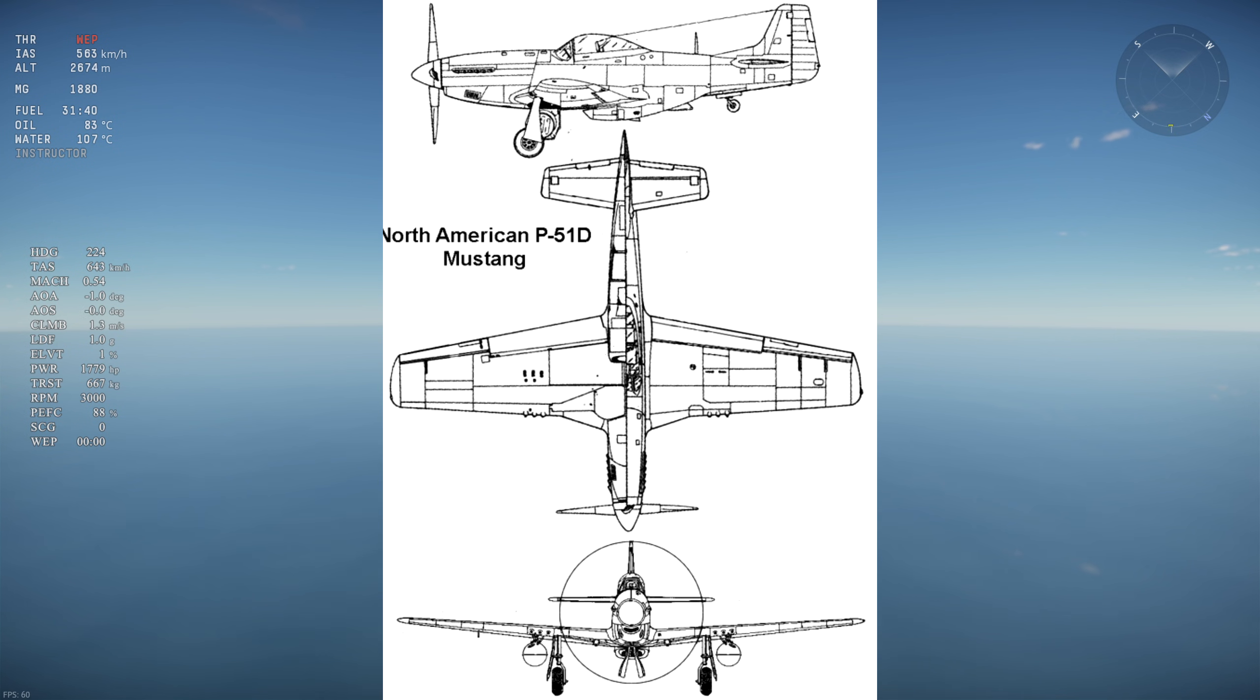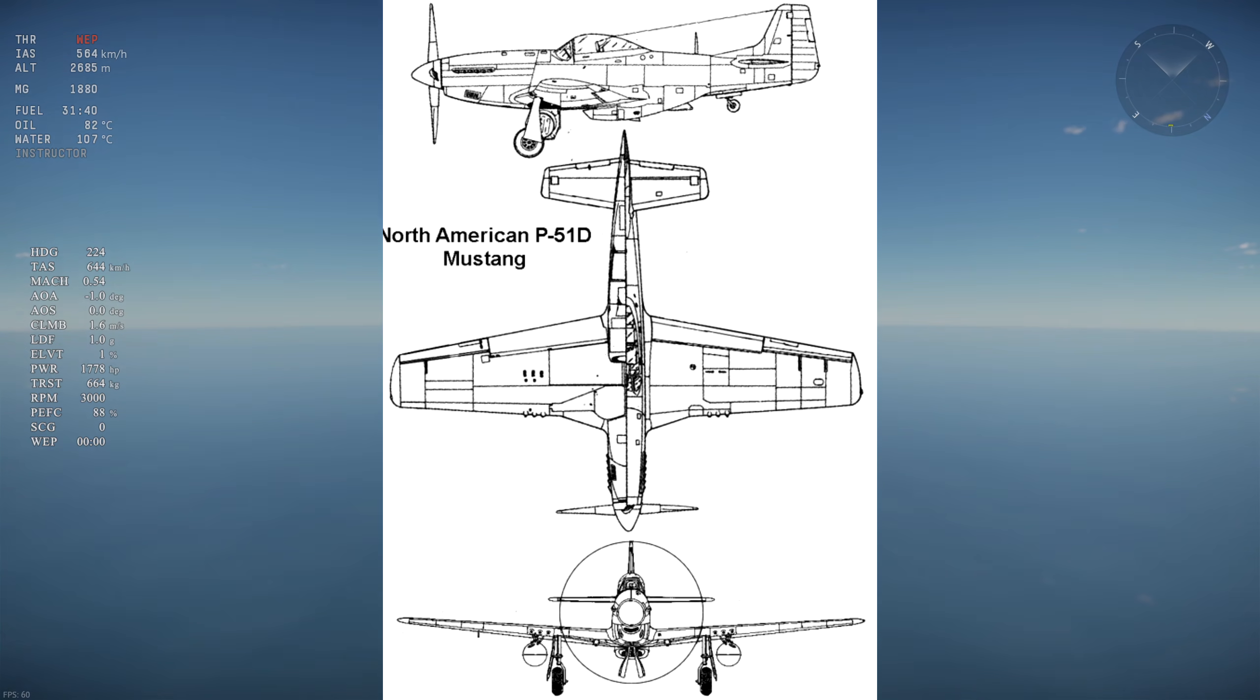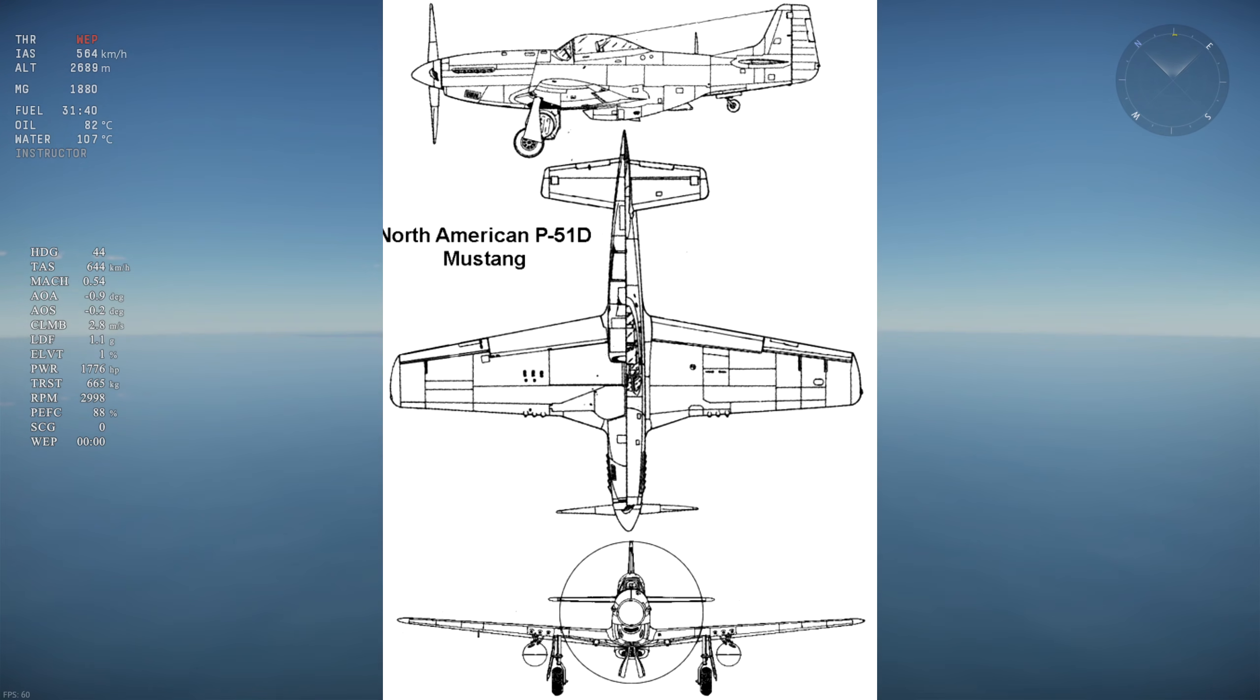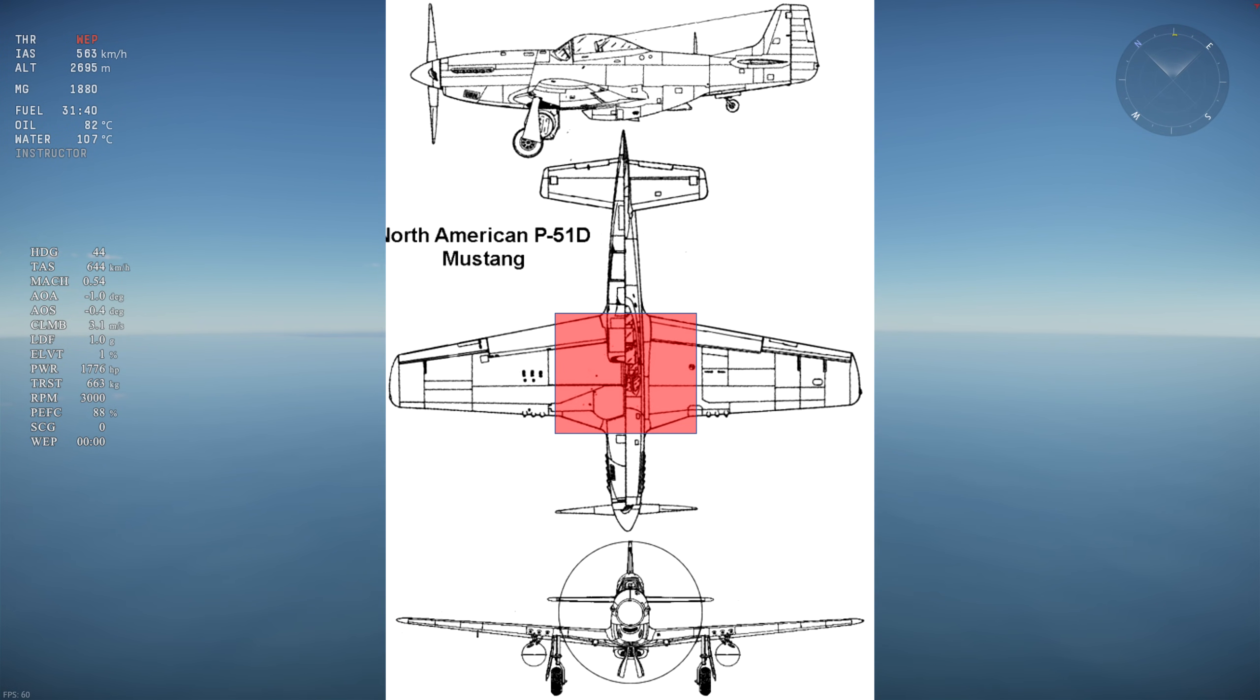But for the sake of argument, let's see how much laminar flow would change the performance of the aircraft. First, let's remove the parts of the wing where we know there won't be laminar flow. The part of the wing directly behind the propeller is subject to prop wash, which is higher speed, spinning, and turbulent flow, which prevents laminar flow on that portion of the wing.